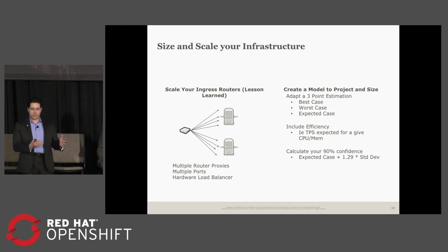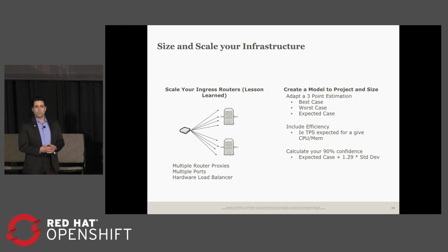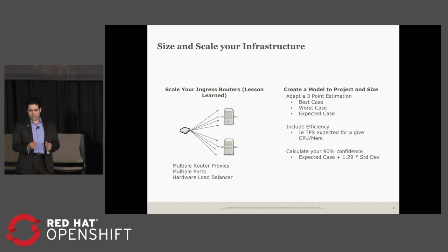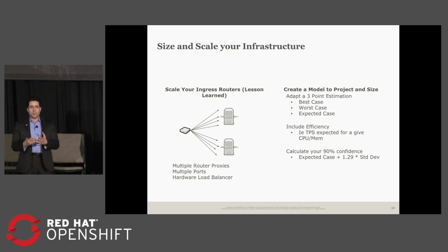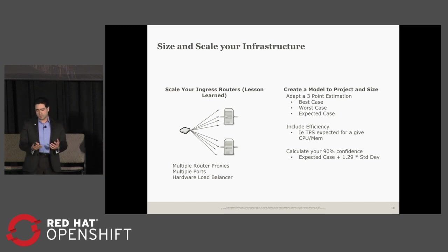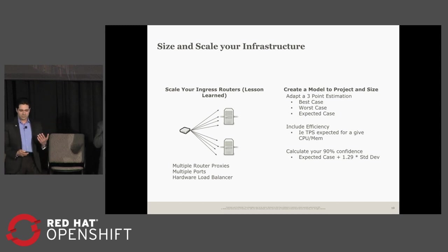Sizing was another thing — how do we plan out the purchasing of hardware? With the help of Red Hat, we put together a three-point estimation model: what's our best and worst-case volume? Make sure you include things like efficiency — for a given transaction per second, how much CPU and memory do you need in terms of millicores and memory? Then build a normal distribution and say, for 90% confidence, given these best and worst cases, I will need this many servers to deal with production. That's where we eventually got to. It took some time, but this is a maturing process.